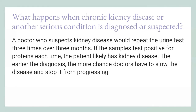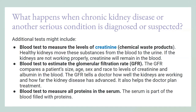A doctor will test the urine three times over three months; if all samples test positive for proteins, the patient likely has kidney disease. The earlier the diagnosis, the more likely it is to slow the disease. Additional tests include blood tests to measure levels of chemical waste products — if the kidneys don't work properly, creatinine and other waste products remain in the blood. Blood tests can also estimate the glomerular filtration rate (GFR), which tells the doctor whether the kidneys are working properly and helps plan treatment. Blood tests measuring all proteins in the serum — the protein-rich part of blood — help assess transport of fatty acids and thyroid hormones.